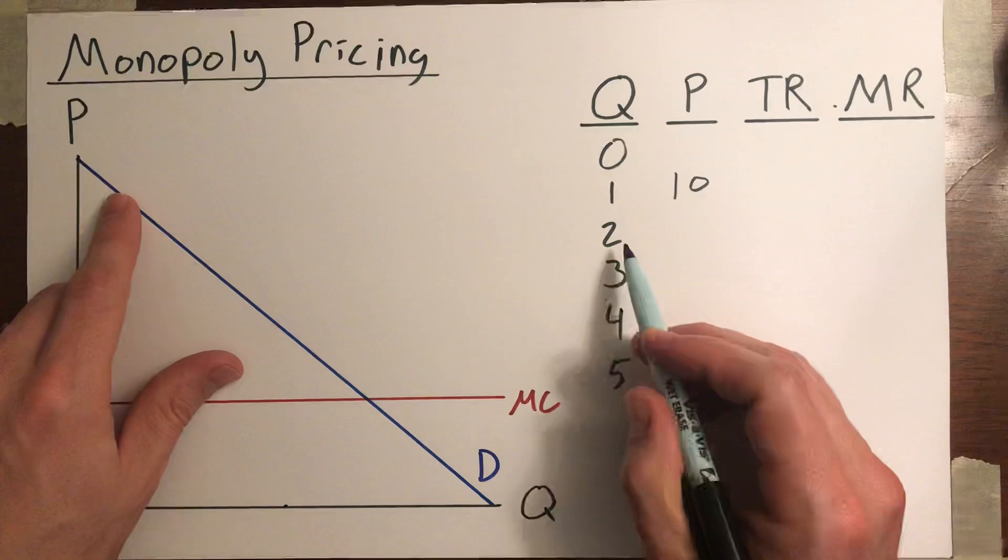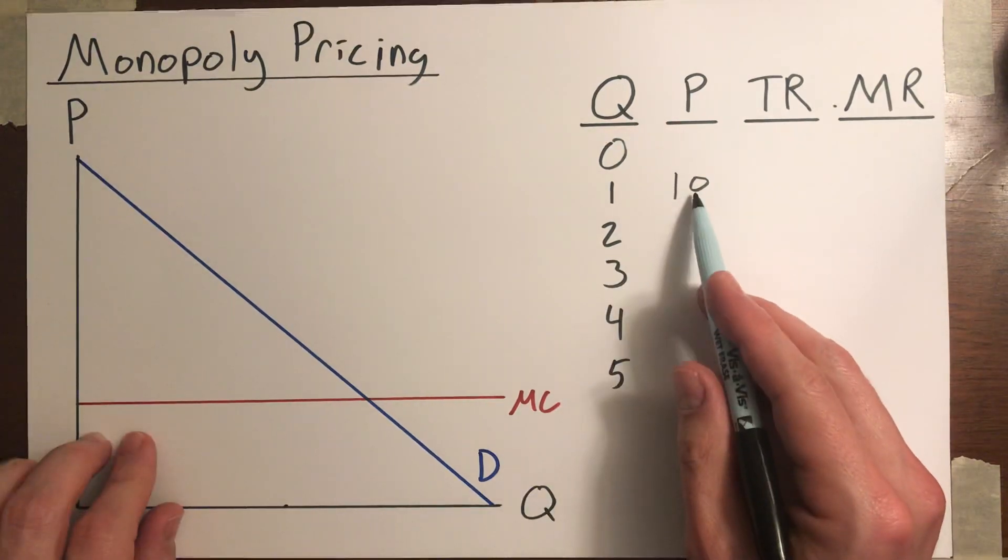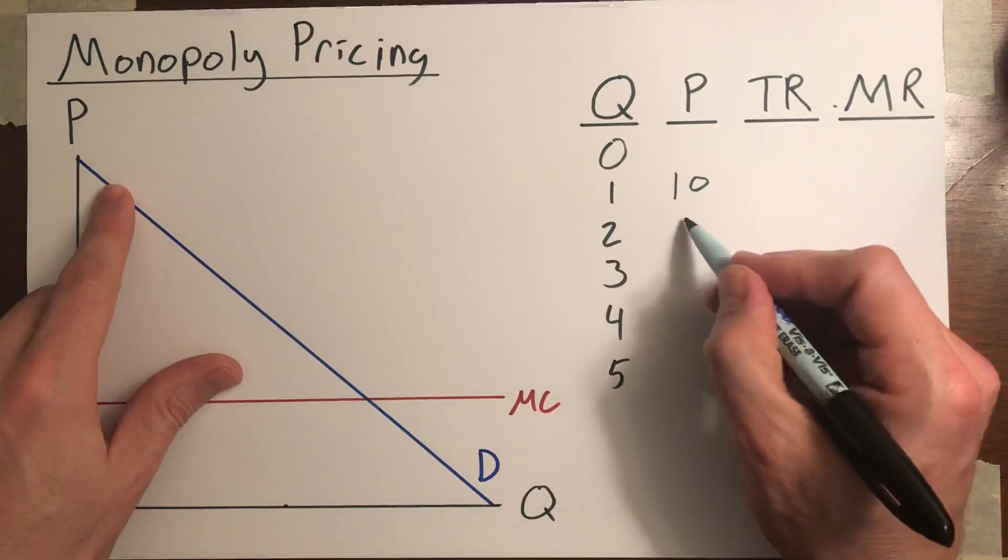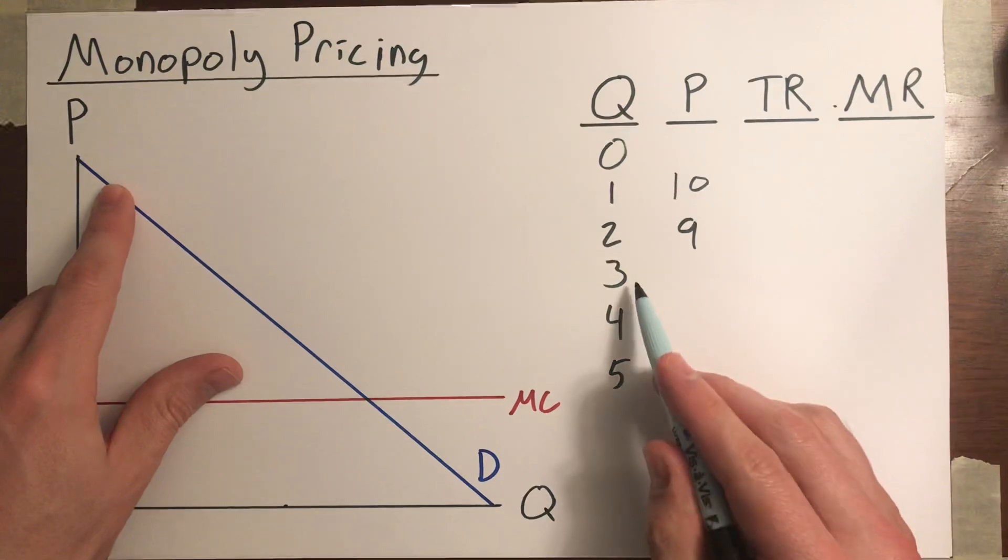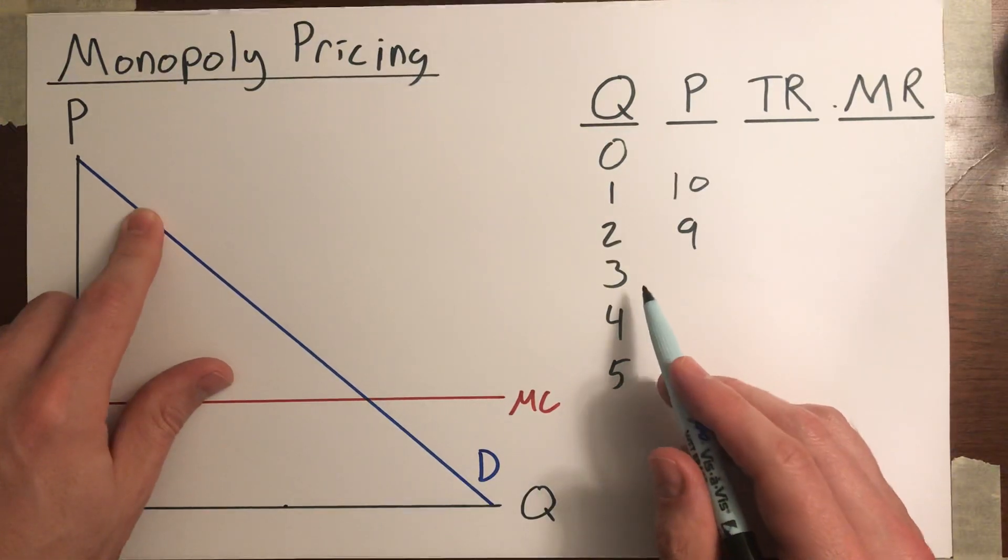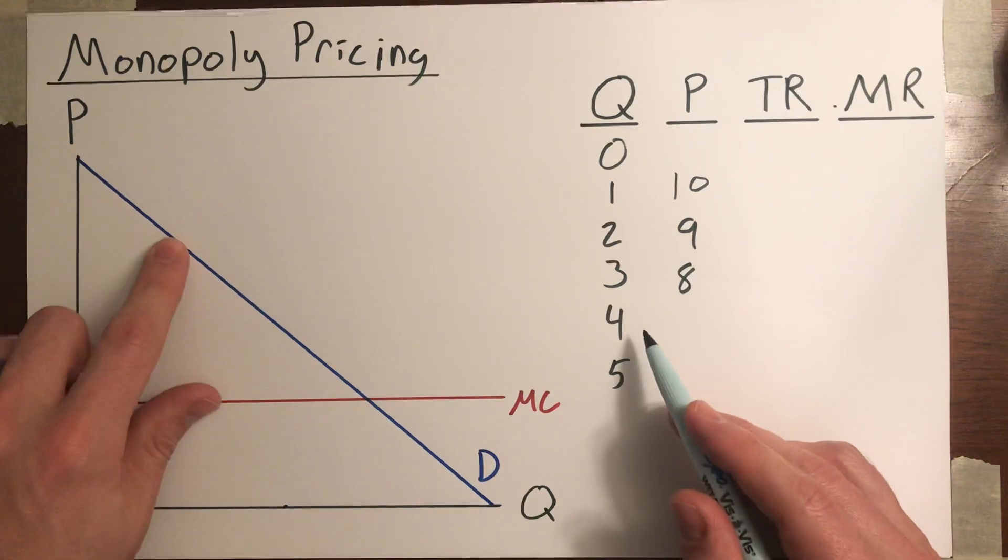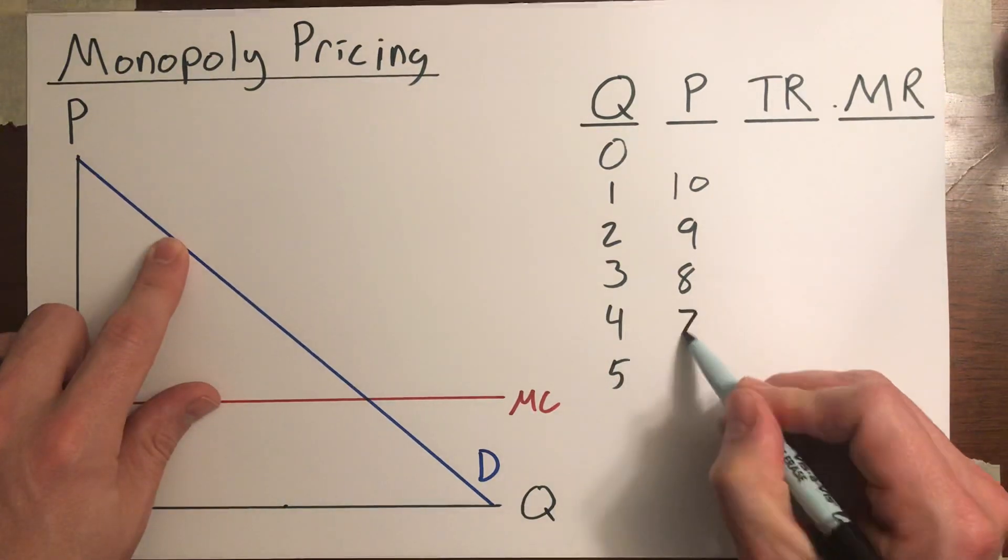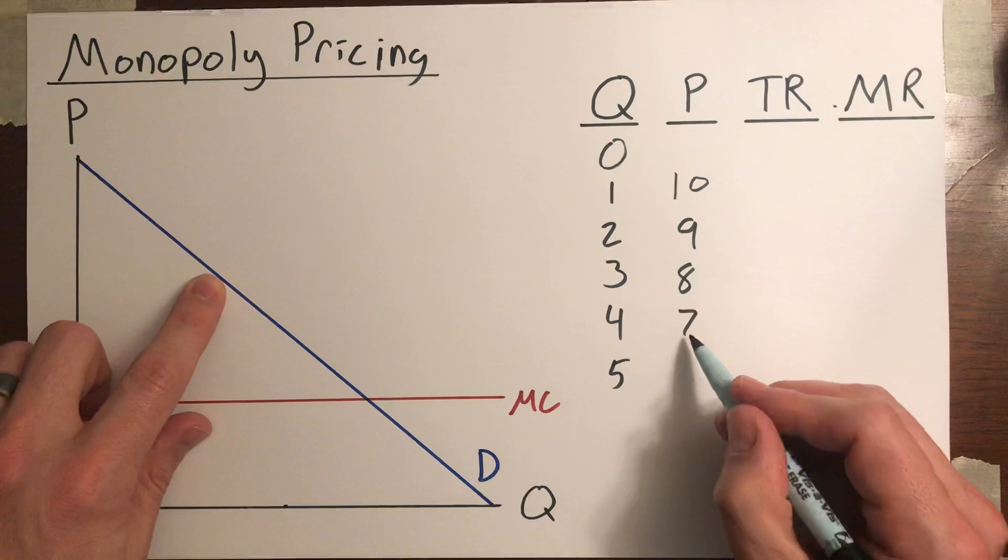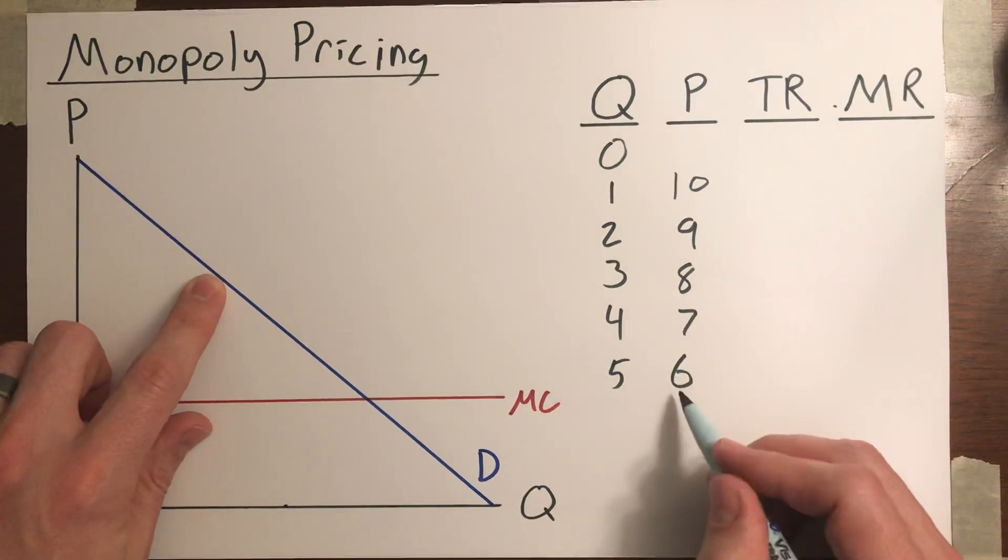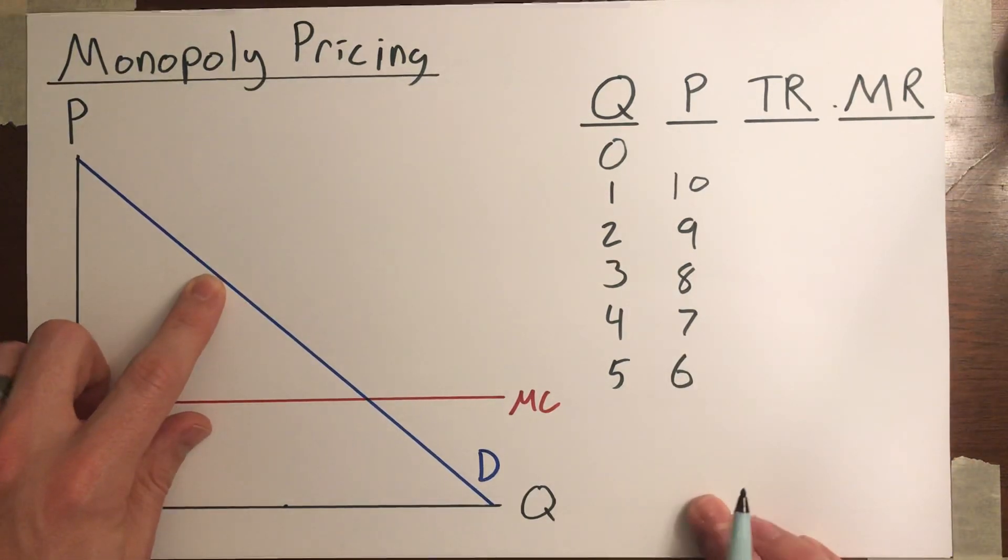Now, if you wanted to sell the second unit, you would have to cut your price from $10 to $9. To sell a third unit, you'd have to cut the price again from $9 to $8. To sell the fourth unit, you'd have to cut the price again now to $7. And we'll say if you cut the price to $6, you could sell five units.